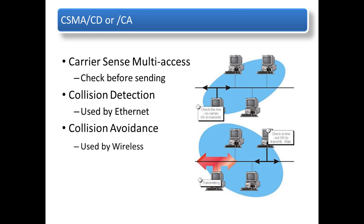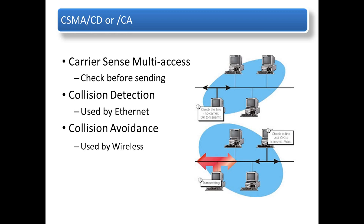CSMA/CD checks for the carrier. If present, it will wait and check again. When no carrier is present, the device will transmit. Collisions can still occur when using these methods, but that topic is for another discussion.